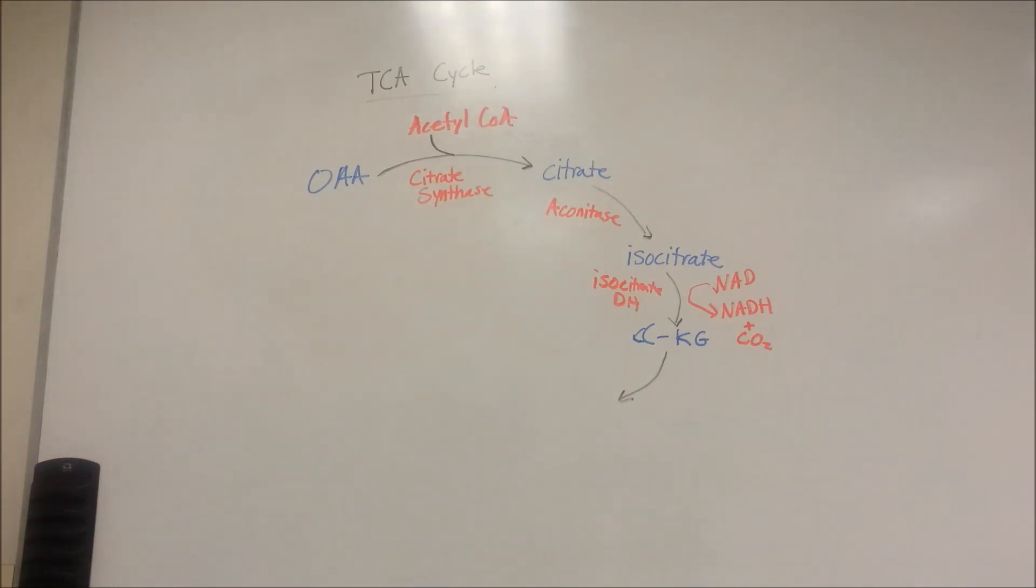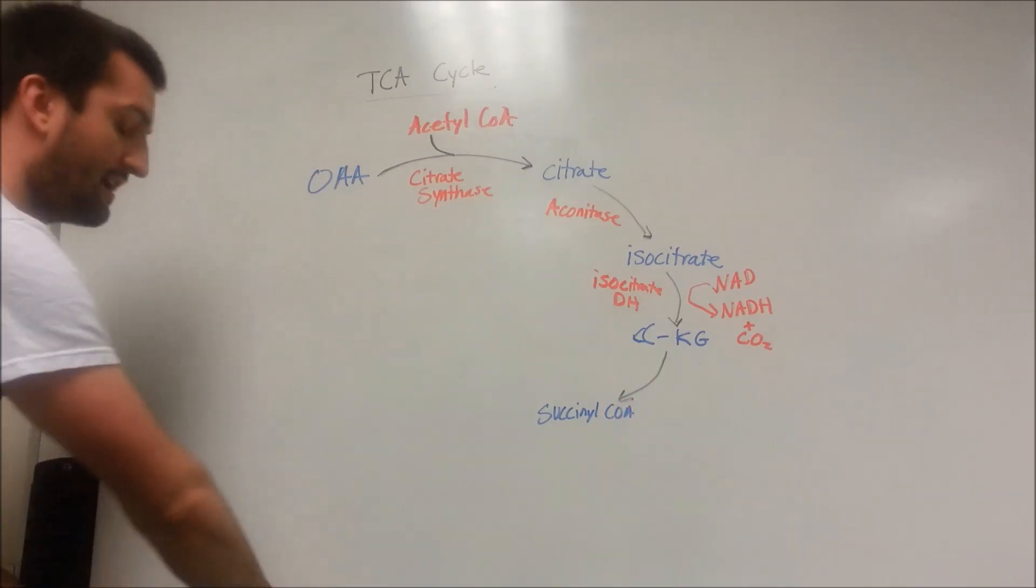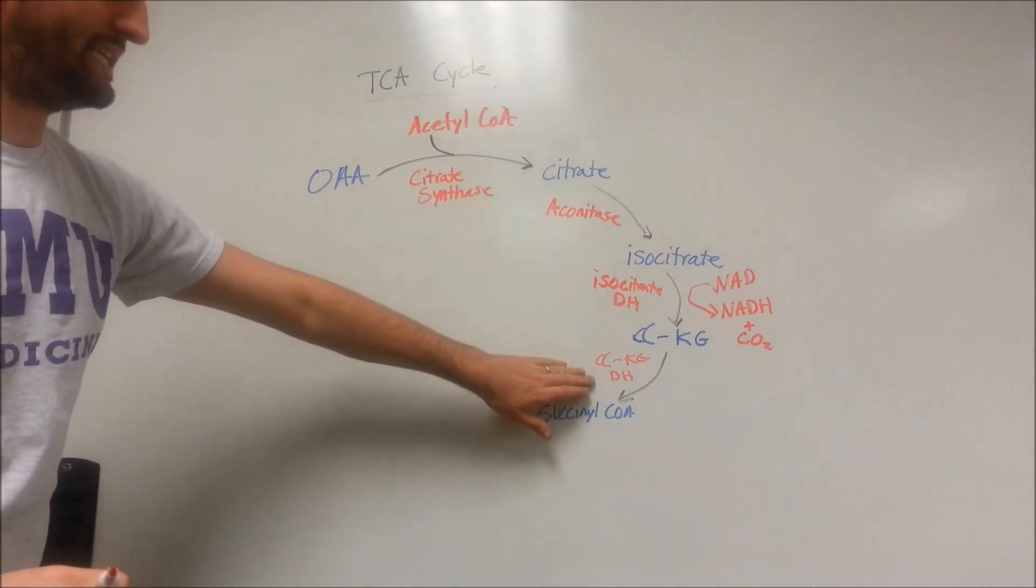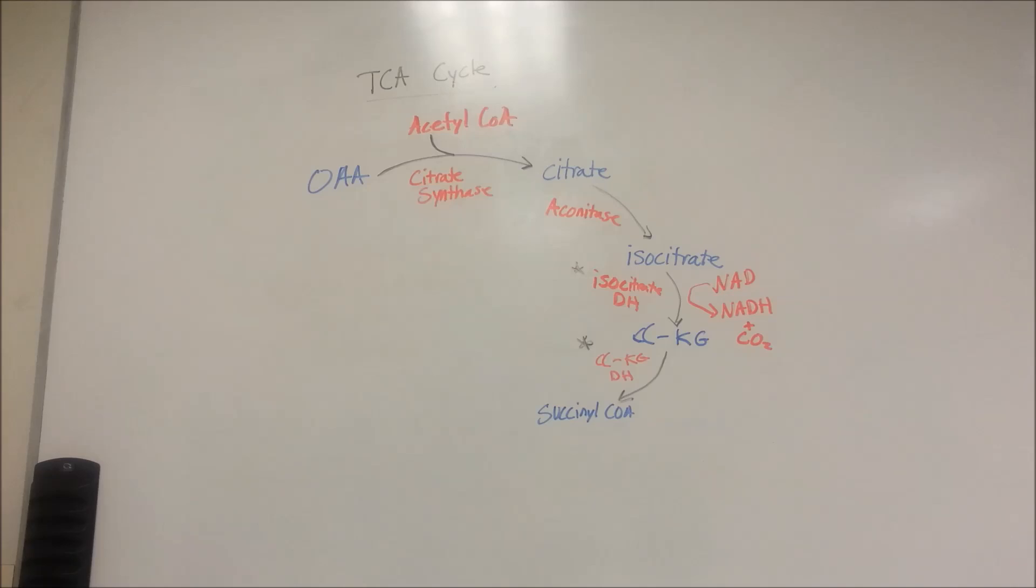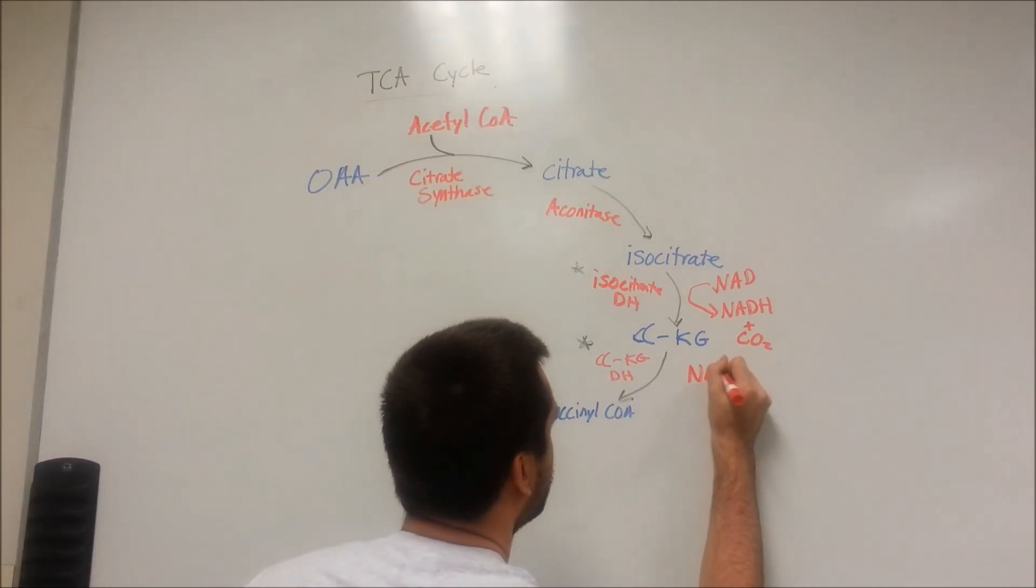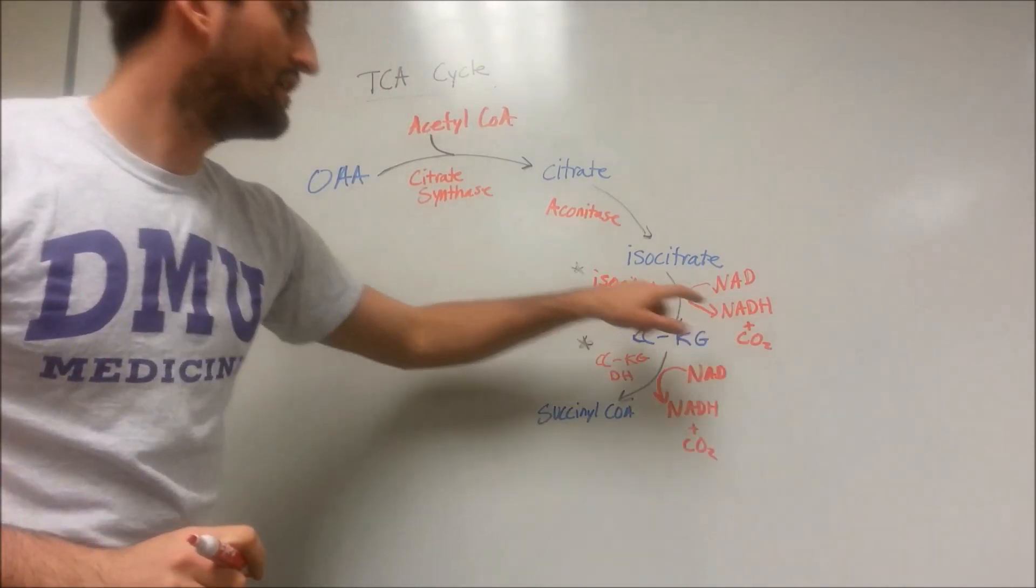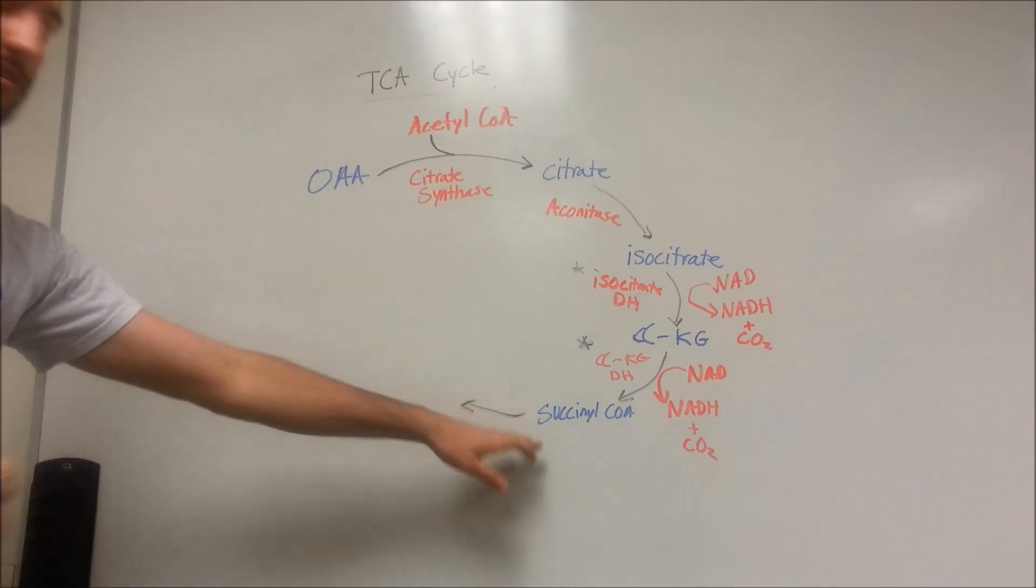Our alpha-ketoglutarate gets converted into succinyl-CoA using alpha-ketoglutarate dehydrogenase. We should star it because it does the exact same thing as the previous step. It's going to take NAD, feed it in, and kick out an NADH and a CO2. We've already accounted for two of our three NADHs and two of our two carbon dioxides. We still have a little bit more to go. We still need another NADH, an FADH2, and a GTP.